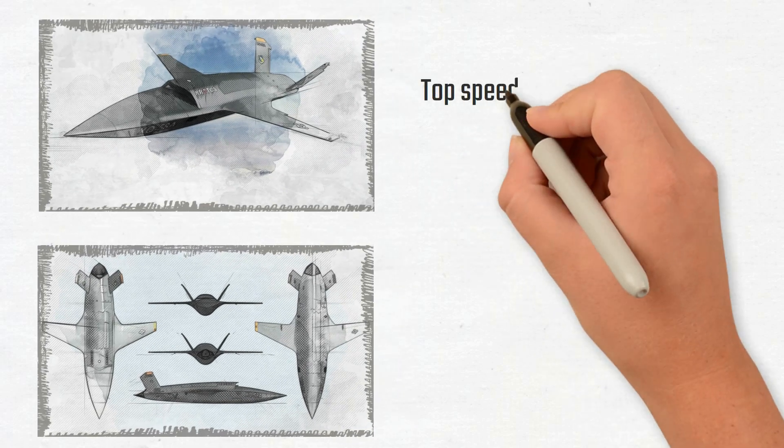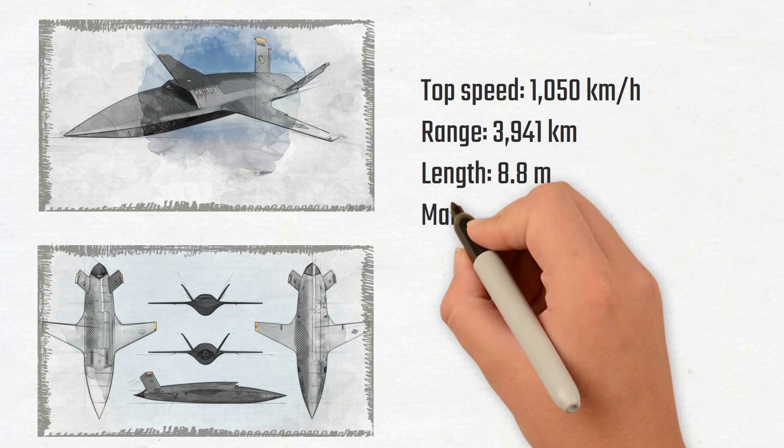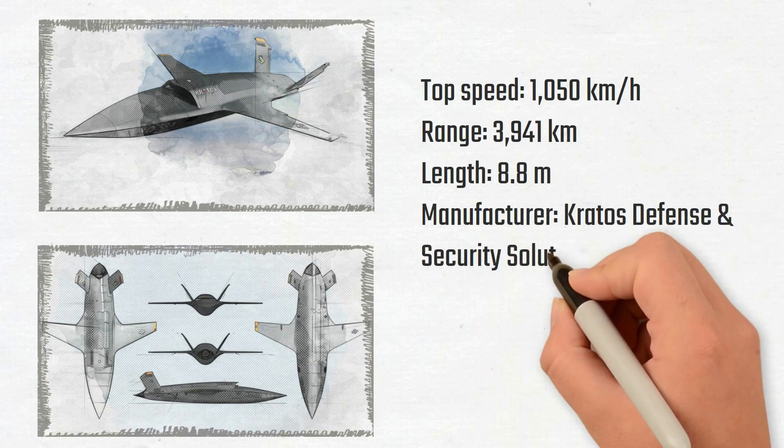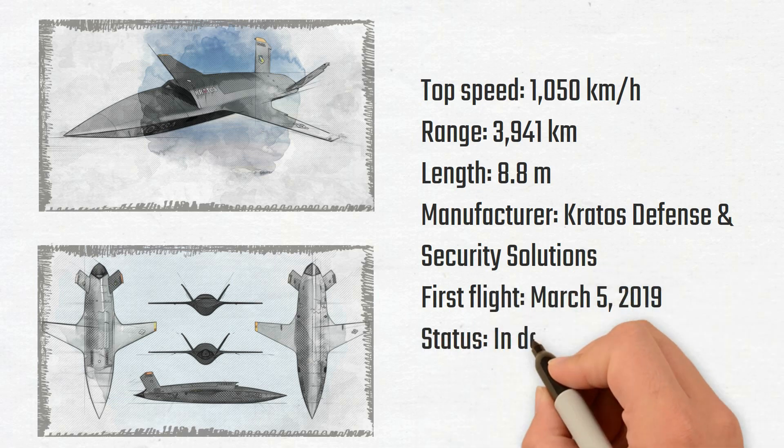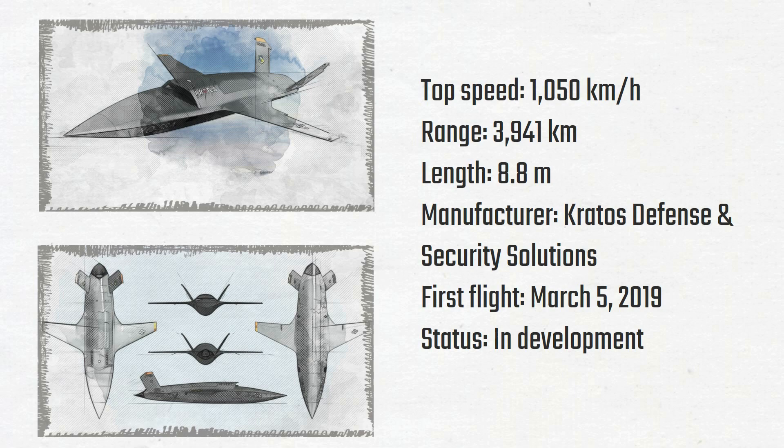At Yuma Proving Ground in Arizona, the Valkyrie conducted its inaugural flight on March 5th of this year. This drone is produced in large quantities quickly because of the low-cost attritable aircraft technology portfolio.